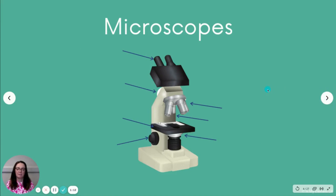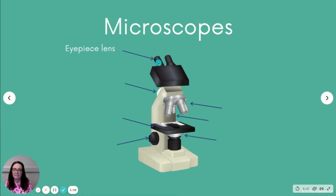We're going to run through the different parts of the microscope and explain what they're used for as we go through this lesson. First, this here is the eyepiece lens — the lens that we look through with our eye. It's the first lens we look through and it has some magnification on it.